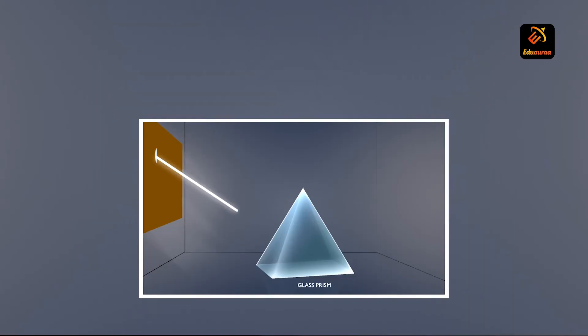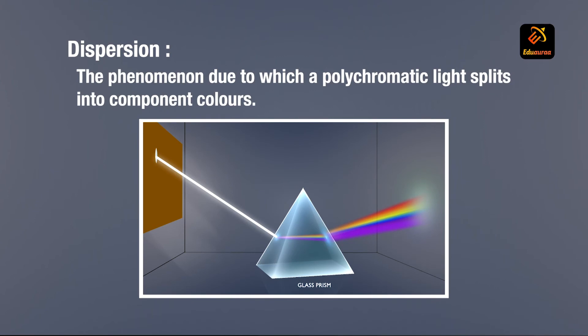Next is dispersion. What is dispersion? The phenomenon due to which polychromatic light splits into component colors is termed as dispersion.